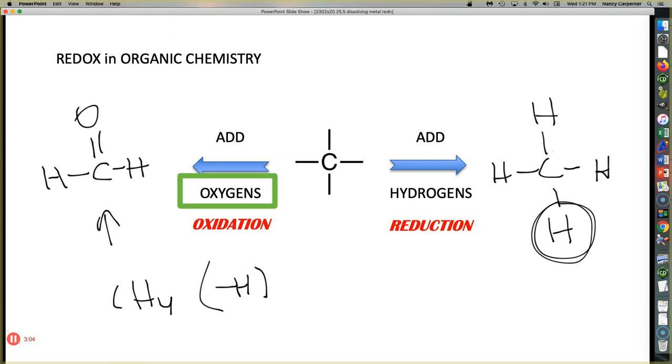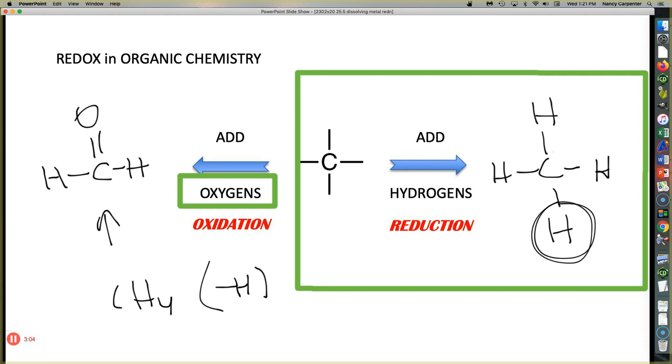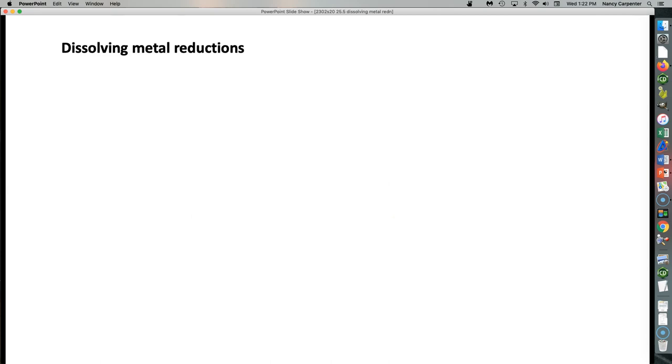We'll see a lot more about redox chemistry later on. I think it's Chapter 19. But for now, what I want you to focus on is this side, because that's the rest of Chapter 25, adding hydrogens via a radical reaction. So, how does this happen? Well, it happens through dissolving metal reductions. What on earth does that mean?